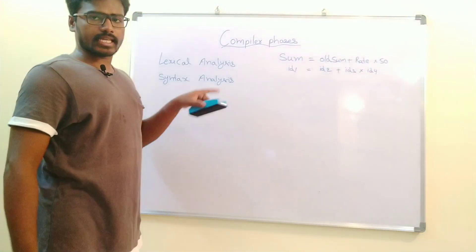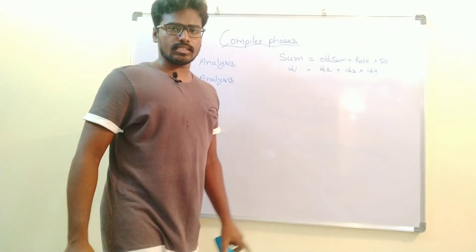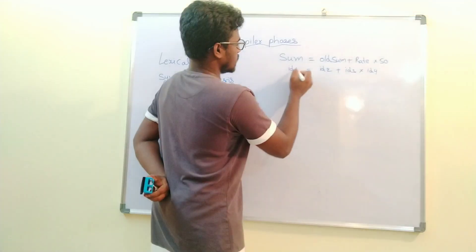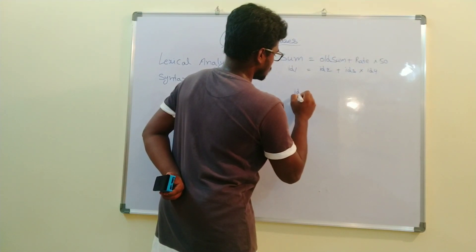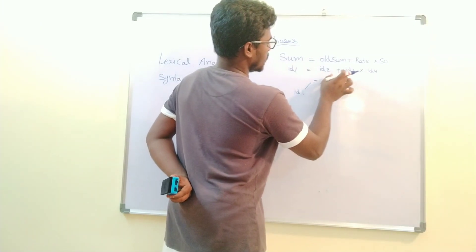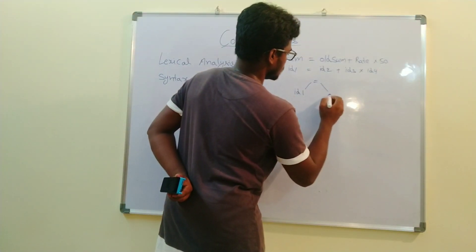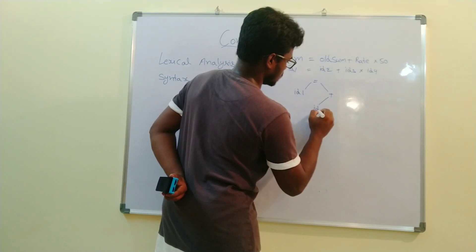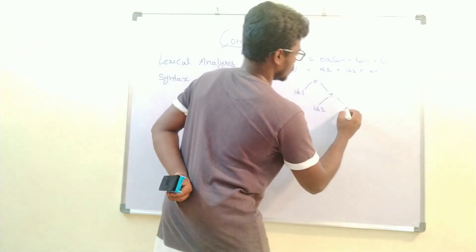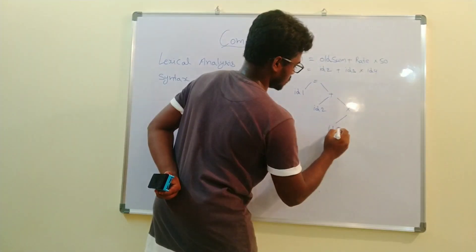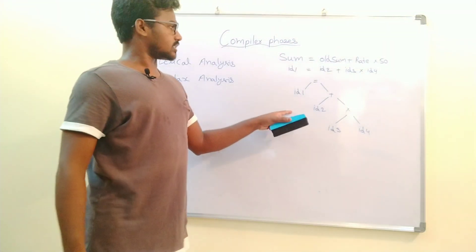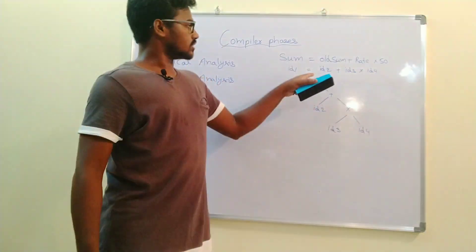Those kinds of errors will be identified in the syntax analysis phase. The output of syntax analysis will be a tree structure. It takes the tokens and forms a tree: the result of id1 = id2 + the remaining, which is id3 * id4. It forms a tree structure based on the tokens and operators.